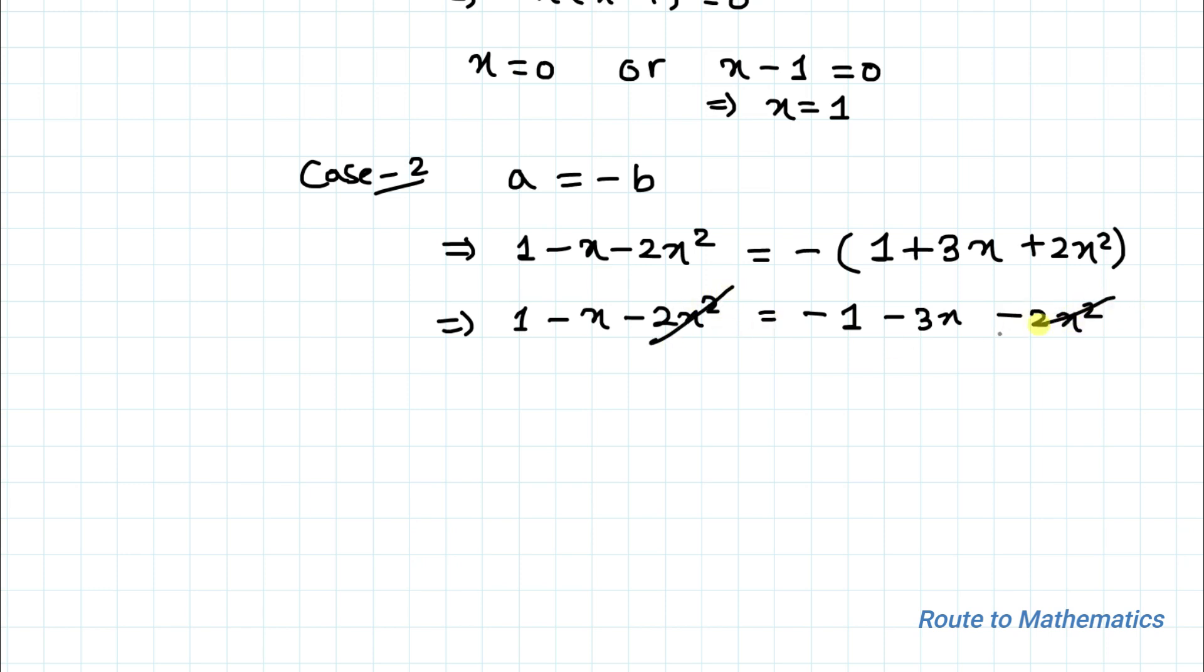So -2x² and -2x² get cancelled out. We have 2x equals -2. This implies x equals -1 is another solution of x.